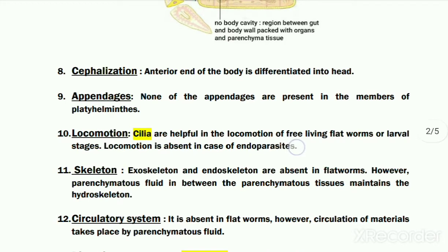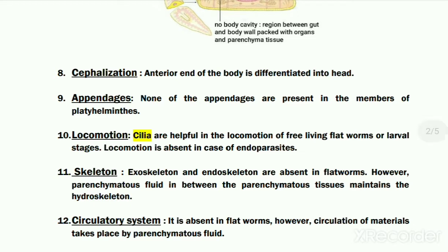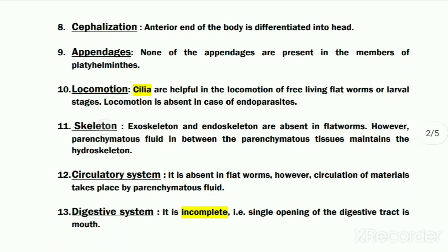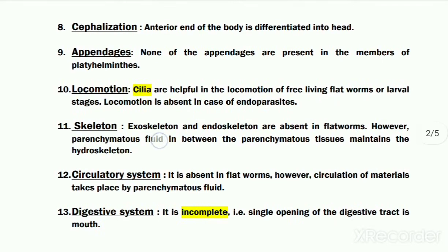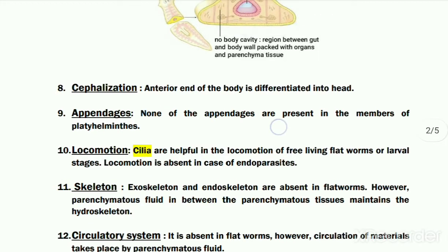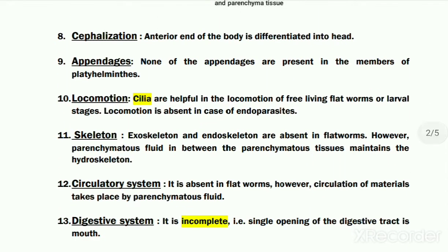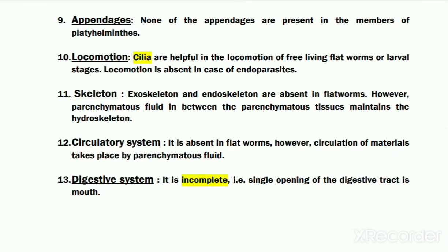Locomotion is absent in most of the parasites, especially the endoparasites, while in free living flat worms there is presence of cilia which help in locomotion. Regarding skeleton, any type of exo or endoskeleton is absent in flat worms, but the parenchymatous fluid present within the parenchyme or mesenchyme acts as a hydroskeleton. This parenchymatous fluid also helps in circulation of materials in the body, so it also acts as a circulatory system.